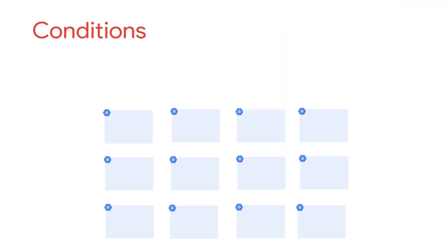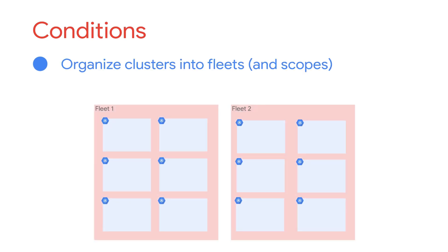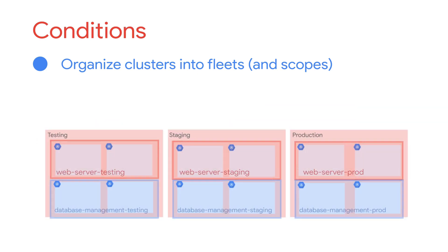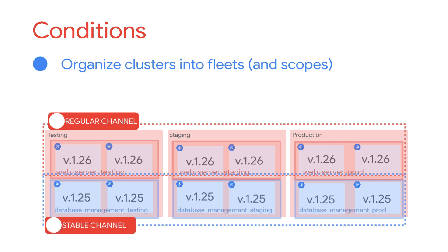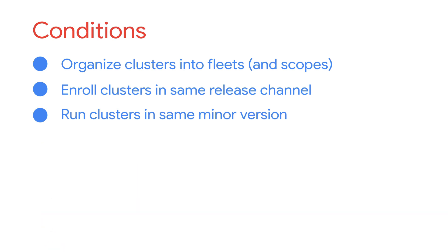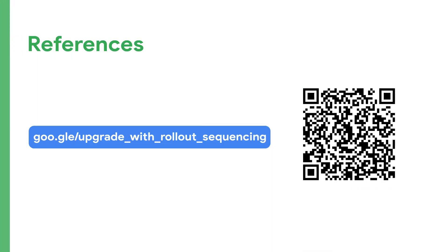As you can see from these examples, if you want to manage cluster upgrades with rollout sequencing, you have to organize your clusters into fleets and scopes if you want to manage a scope-based rollout. All clusters in a rollout sequence should be in the same release channel and minor version to successfully upgrade to new versions. In this video, you've seen how rollout sequencing gives you even more control over the upgrade process than just using release channels. For more information, check out our documentation.